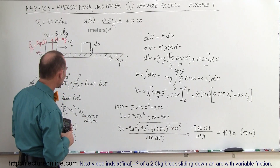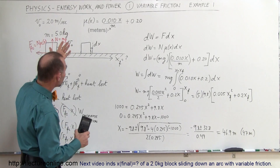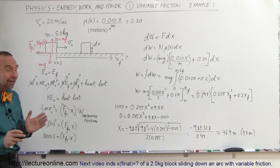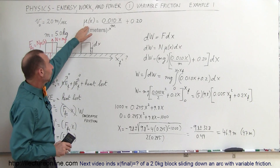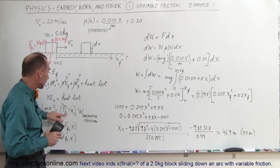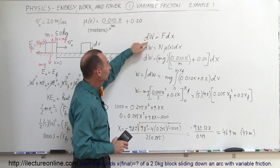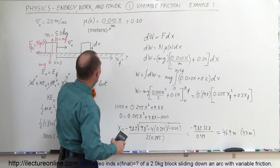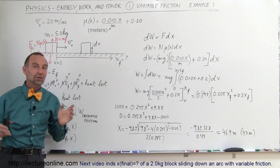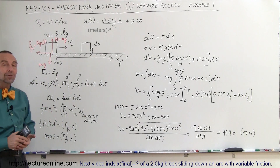A quick check: with a coefficient value and traveling 47 meters at an initial 20 meters per second, that looks reasonable. For a quick review: whenever the coefficient of friction is not constant, we cannot simply multiply friction force times distance because the friction force varies with x. Instead, we find the work done over a small displacement and integrate that from 0 to wherever we're going — that's how we find the true work done to overcome variable friction.